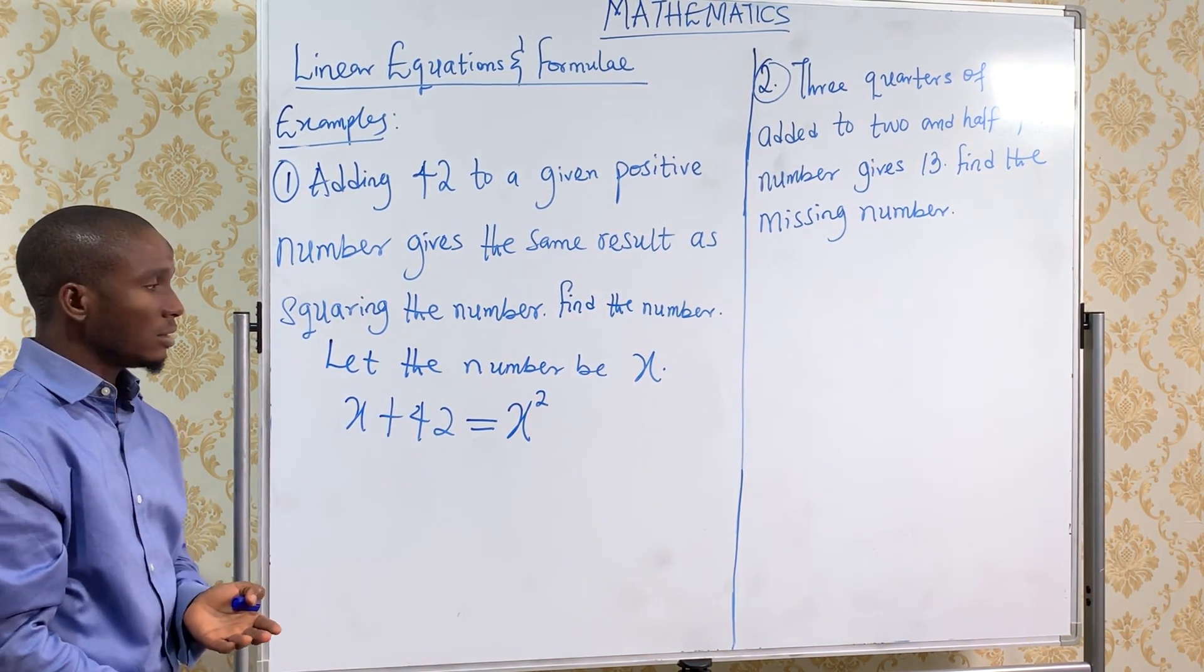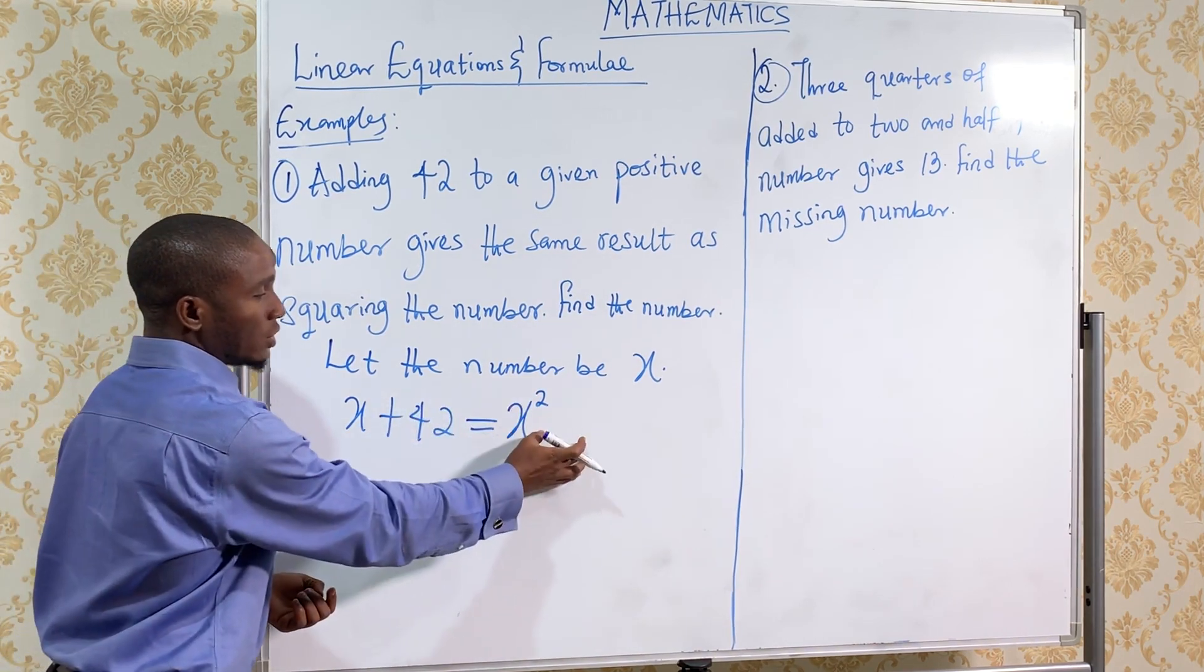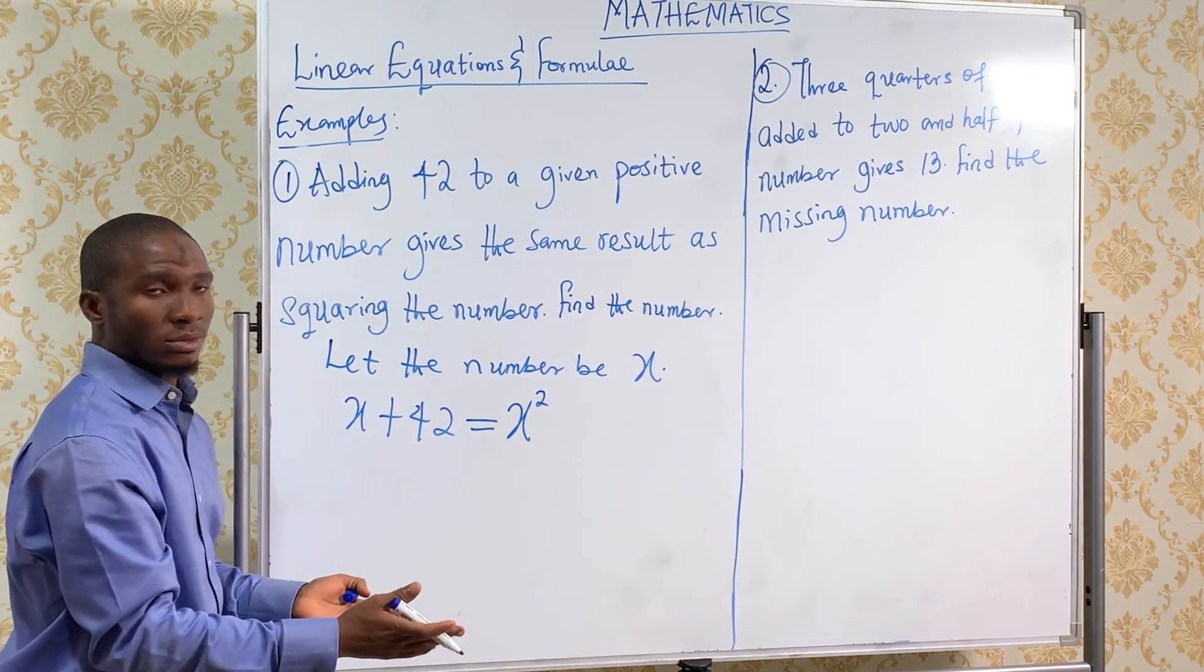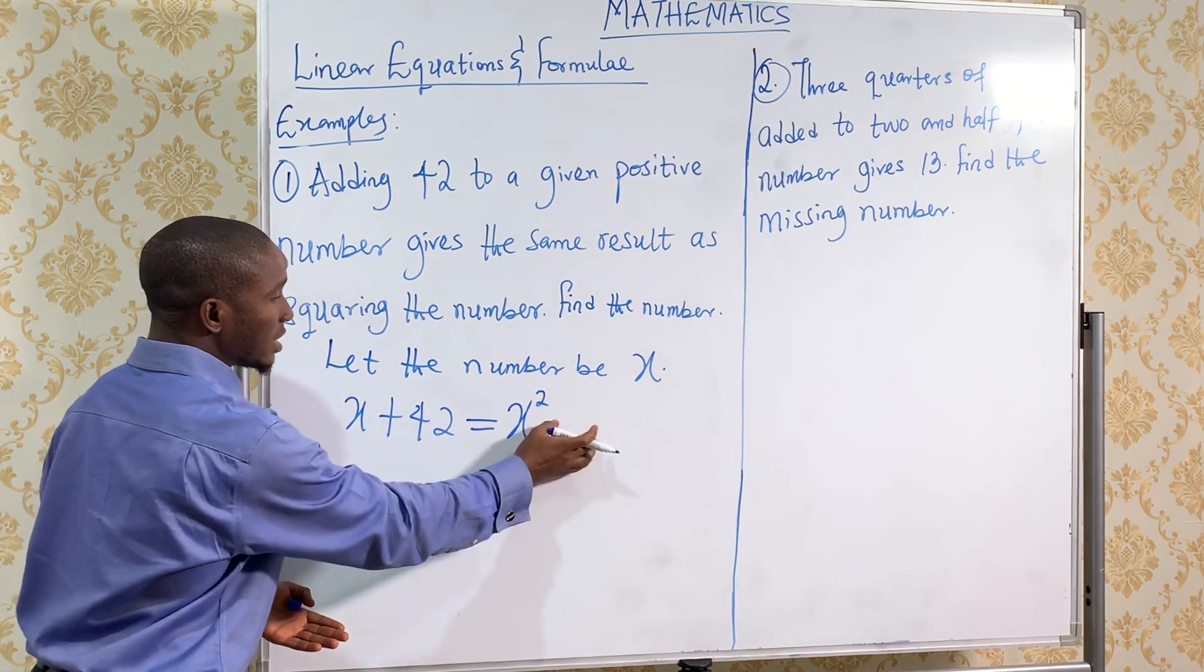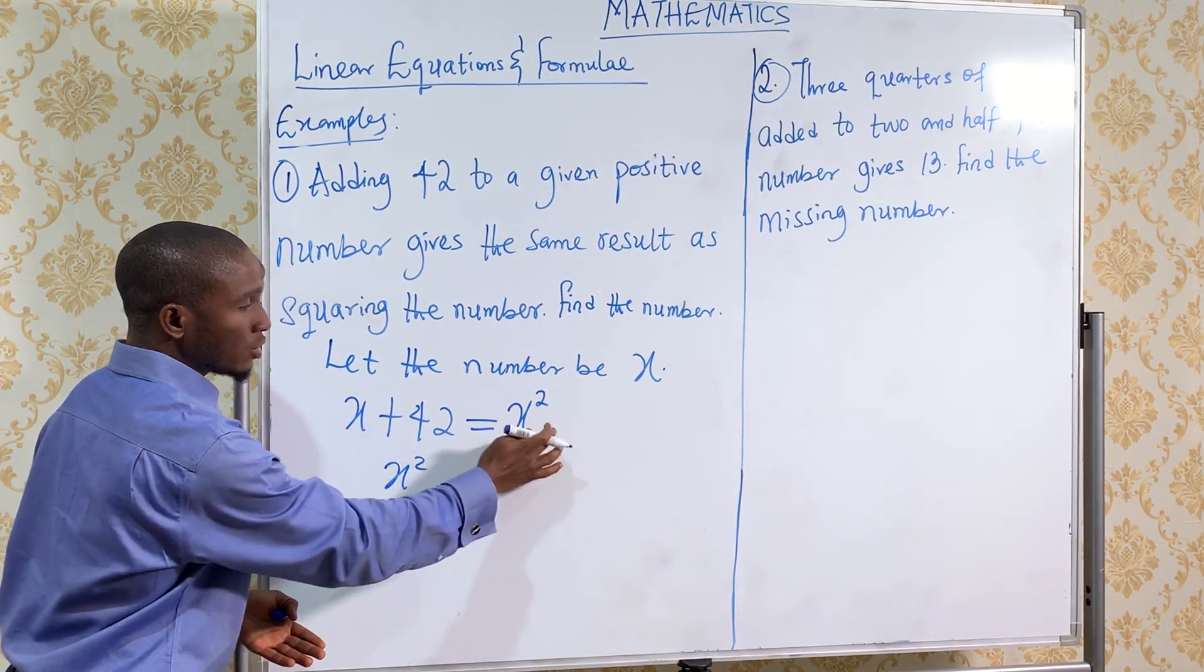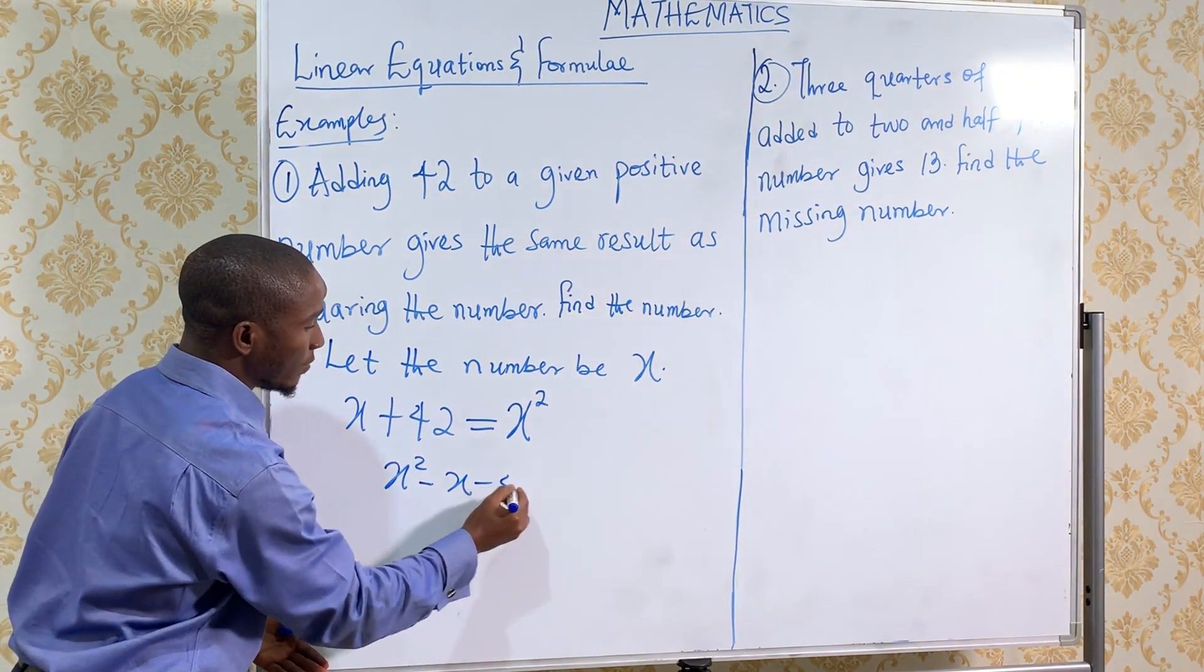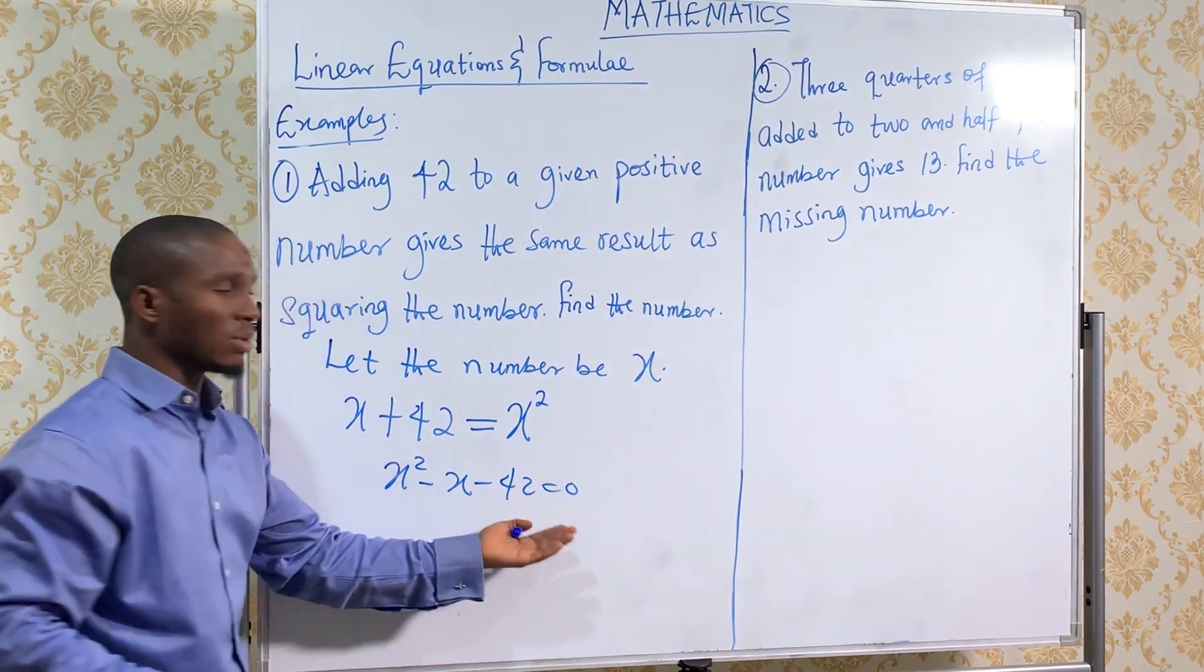I'm going to transfer this to this side of the equation, then you factorize it. If you bring this to this side, I'm going to have x squared. If x comes to this side it becomes minus x, and 42 comes here becomes minus 42 equals zero. Then you can factorize it.